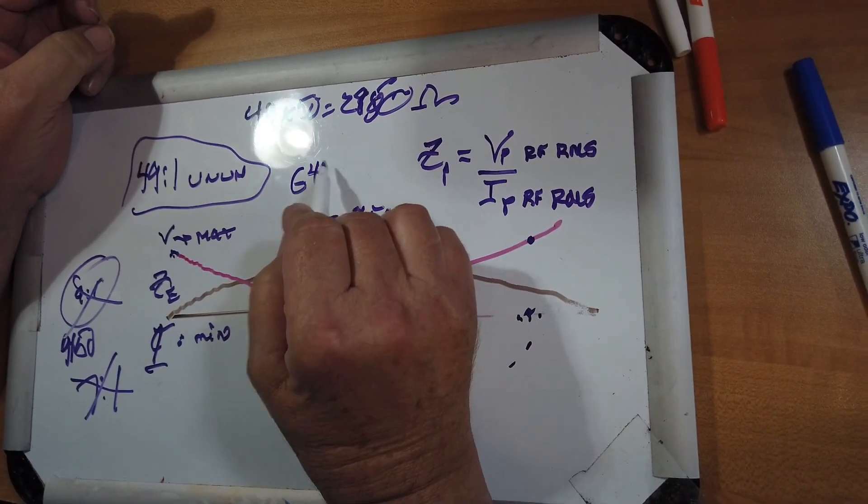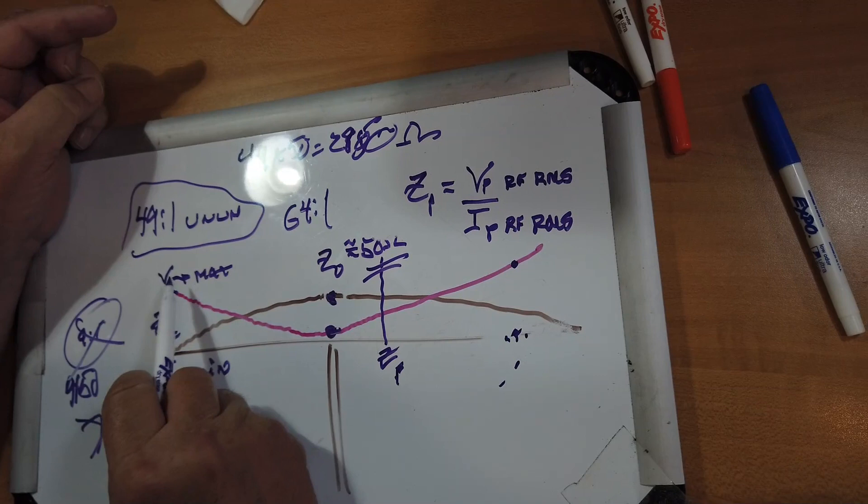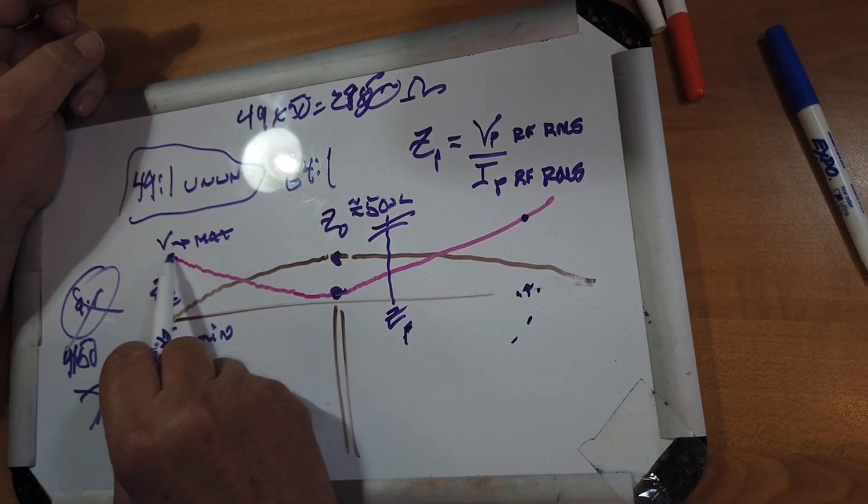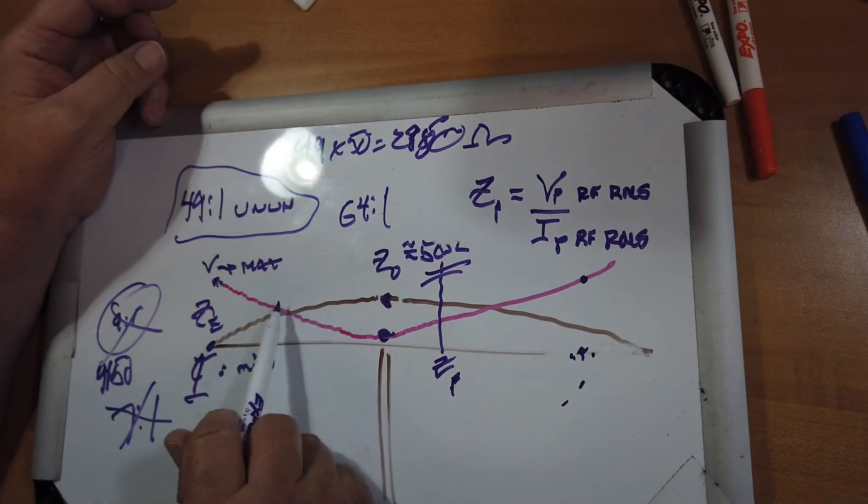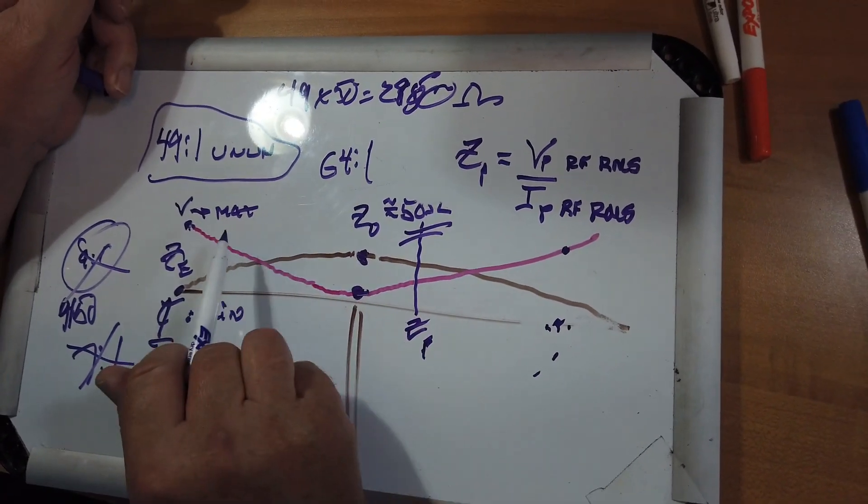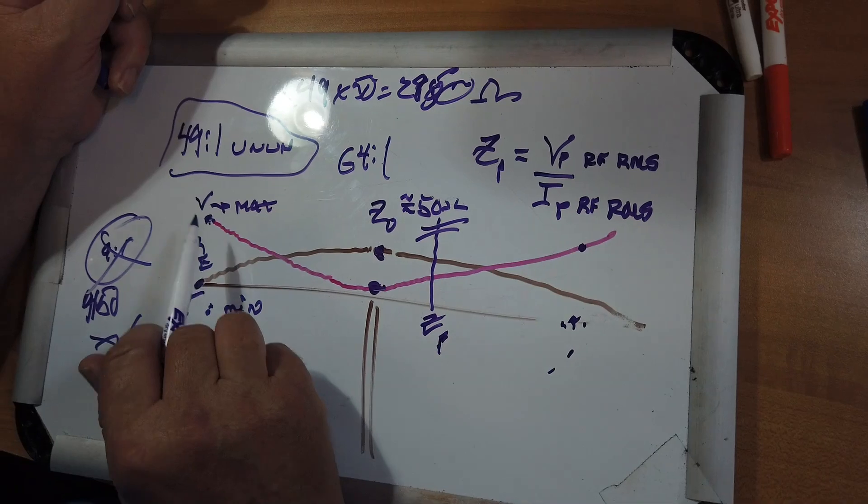A 64 to 1 would also work here. The idea being that this is high, this is low, and you divide a high number by a low number, you get a large number. And that gets you the impedance at the end.